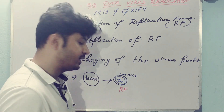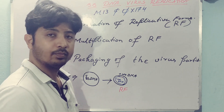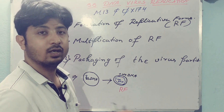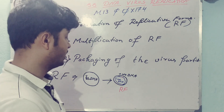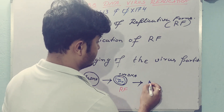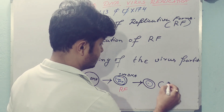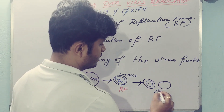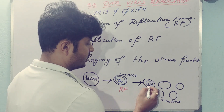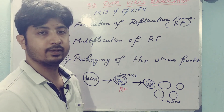This negative single-stranded DNA serves as a complementary copy which will be used to produce copies of the positive single-stranded DNA — that is the original viral genome. From this negative copy, several copies of positive single-stranded DNA will be made. So the negative single-stranded DNA serves the purpose of replicating the viral genome into multiple copies. This structure is called the replicative form.